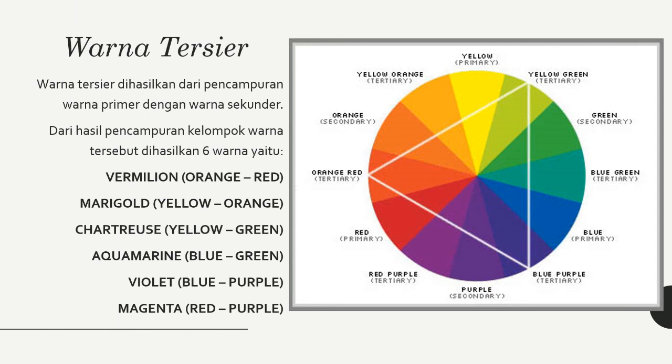Warna Tersier. Warna tersier merupakan campuran salah satu warna primer dengan salah satu warna sekunder. Misalkan saja, warna orange kekuningan didapat dari pencampuran warna kuning dan orange. Warna tersier sendiri berjumlah 6.